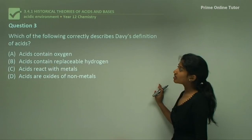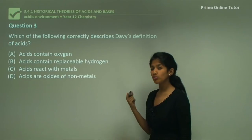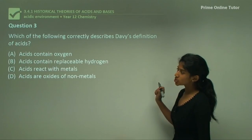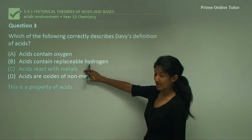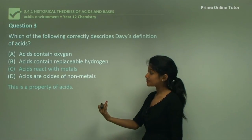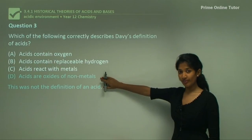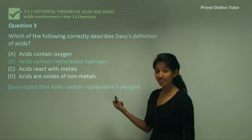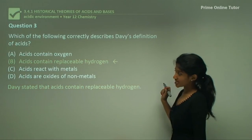Question three: which of the following correctly describes Davy's definition of an acid? The first option (acids contain oxygen) was Lavoisier's definition. Option C (acids react with metals) is a property of acids, not a definition. Option D (acids are oxides of non-metals) was the basis of Lavoisier's theory, not a definition. The correct answer is B — acids contain replaceable hydrogen — which is exactly what Davy proposed as his definition of an acid.